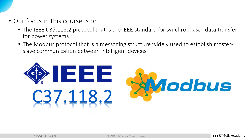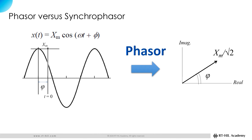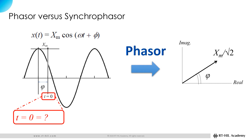Before talking about these two protocols, let's quickly review the definition of synchrophasor and the device that produces it, which is the phasor measurement unit, or PMU. A phasor is the complex number representation of a sinusoidally varying signal. The angle of the phasor, phi, depends on the point at which the signal starts at the beginning of time. The coordinated universal time, or UTC, embedded in GPS signals, can be used to synchronize measured electrical voltage and current waveforms. This synchronization results in a synchronized phasor, or synchrophasor. This process is performed by a device called a phasor measurement unit, or PMU.